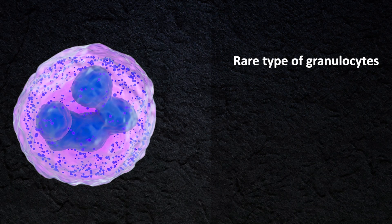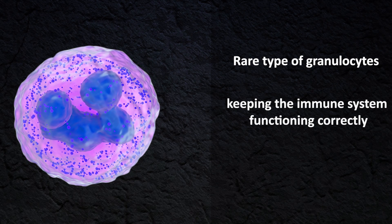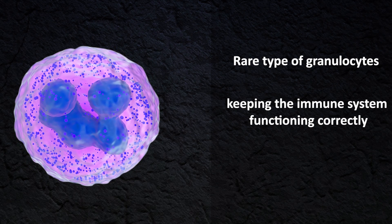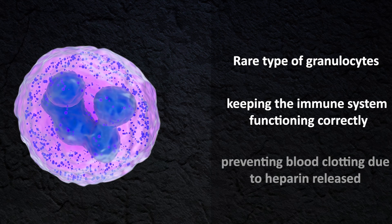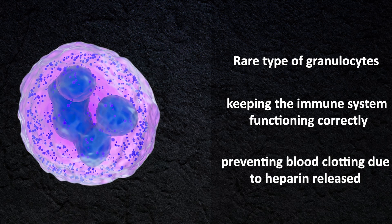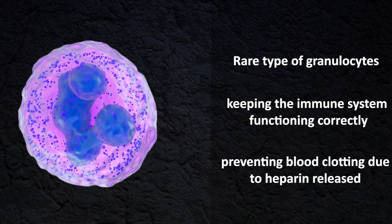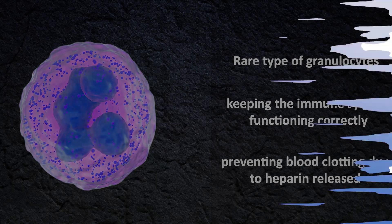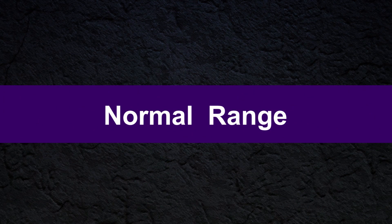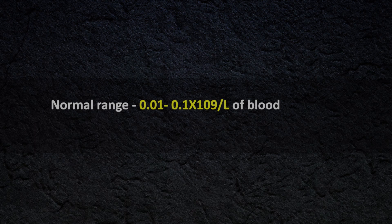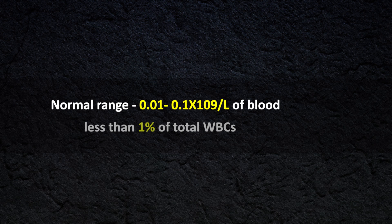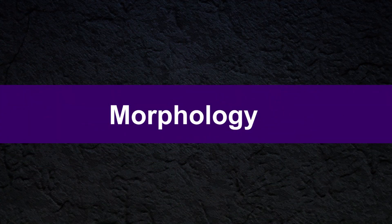Basophils play a role in keeping the immune system functioning correctly. They also have an integral role in preventing blood clotting due to heparin release by these cells. The normal range is about 0.01 to 0.1 × 10 to the power nine per liter of blood. As a percentage, it is less than one percent of total white blood cells.